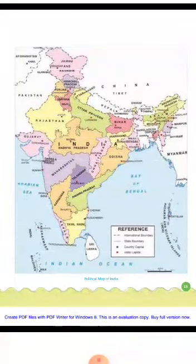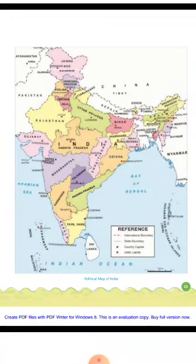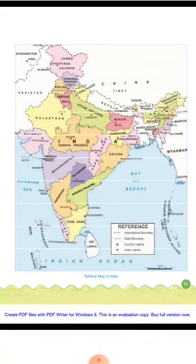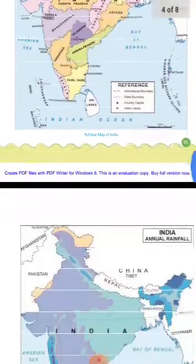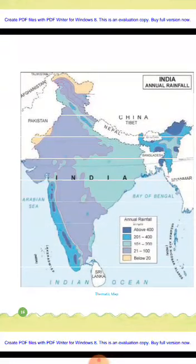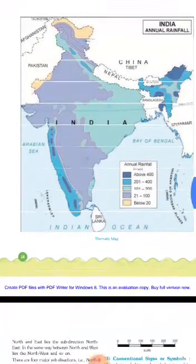This is the political map. You can find the capital, states, and country capitals. The capital is shown in blue color and state capitals in red. Annual rainfall thematic maps show 400 mm in dark blue, 200 to 400 in light green, and below 20 in lighter colors.